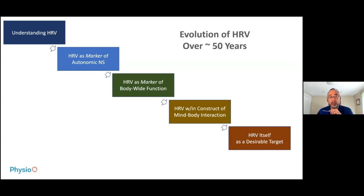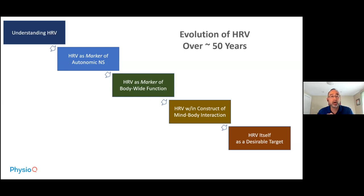As of today, we'll largely focus on part one: understanding heart rate variability. The five stages are: first, understanding heart rate variability; second, heart rate variability as a marker of the autonomic nervous system; third, as a marker of body-wide function; fourth, within the construct of mind-body interaction; and finally, heart rate variability itself as a desirable target.